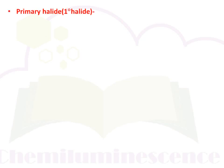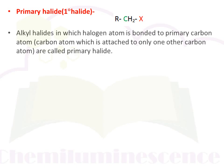A primary alkyl halide: the halogen atom is bonded to a primary carbon atom, which is a carbon attached to only one other carbon atom. Here you can see ethyl halide — this carbon is further attached to only one carbon atom, so the green carbon is a primary carbon. If the halogen atom is bonded to a primary carbon atom, that is called a primary alkyl halide. The definition: an alkyl halide in which the halogen atom is bonded to a carbon atom attached to only one other carbon atom is called a primary halide.